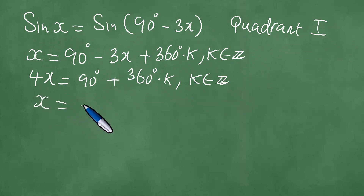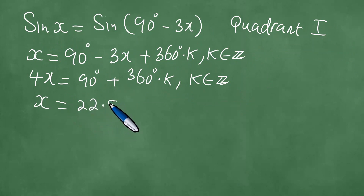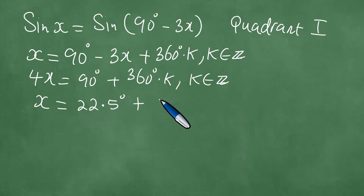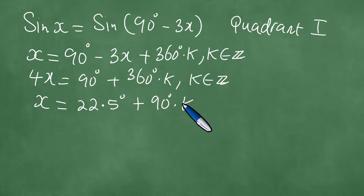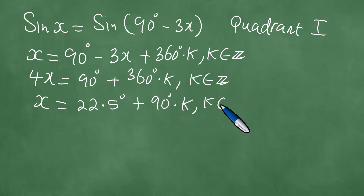Therefore x equals 22.5 degrees plus 90 degrees times k, where k is an element of the set of integers.